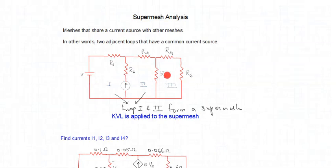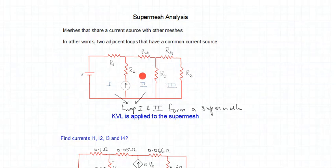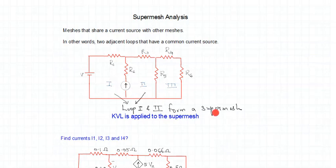We have three loops or three meshes in the given network. To identify the super mesh, first identify the current source. This current source is common to loop one and also common to loop two — it is a common current source between two adjacent loops sharing one common current source. Therefore, loop one and loop two form a super mesh.